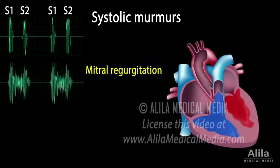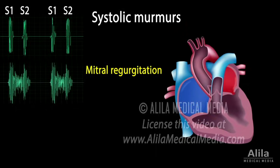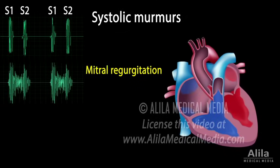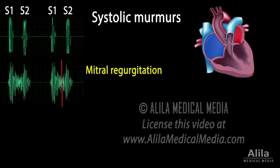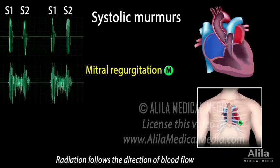Examples of conditions associated with common systolic murmurs include mitral valve regurgitation, when the mitral valve does not close properly and blood surges back to the left atrium during systole. The murmur starts at S1 when the AV valves close and maintains the same intensity for the entire duration of systole. This holosystolic murmur is best heard at the mitral region, the apex, with radiation to the left axilla.